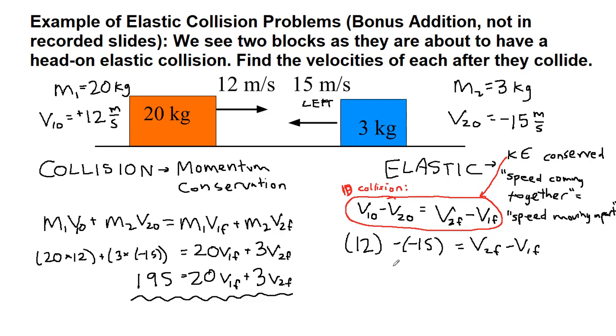So 12 minus negative 15 is a positive 27, equals V2 final minus V1 final. Two equations with the same two unknowns means we should solve for one of our unknowns. So I will add V1F to both sides, so that I can go through substitution. So here we have the other equation, and we can substitute.